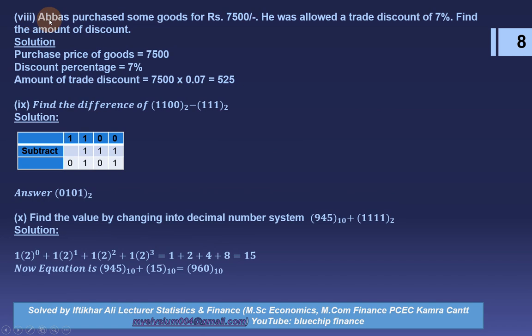Question 8: Abbas purchased some goods for rupees 7,500 and was allowed a trade discount of 7%. The amount of trade discount = 7,500 × 0.07 = rupees 525.